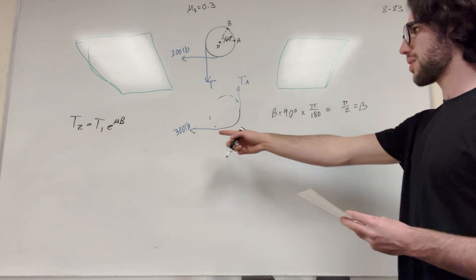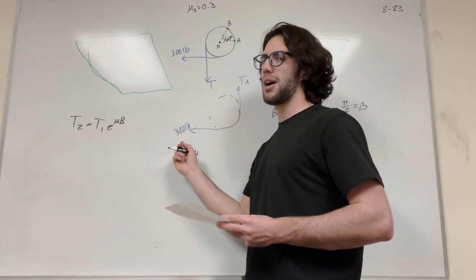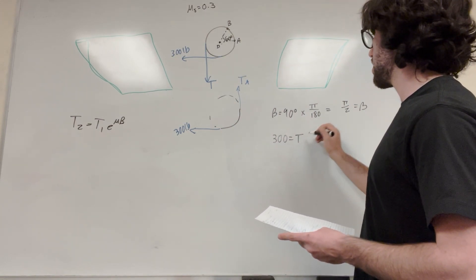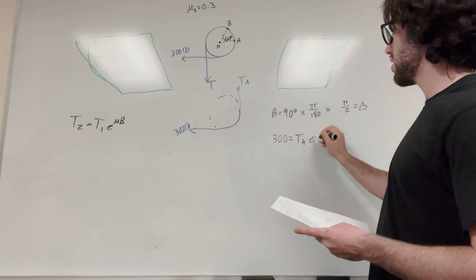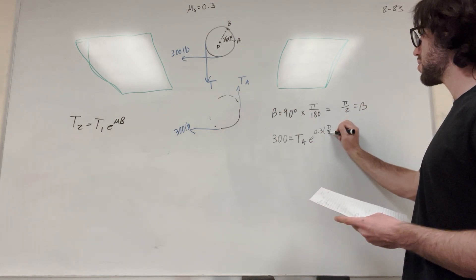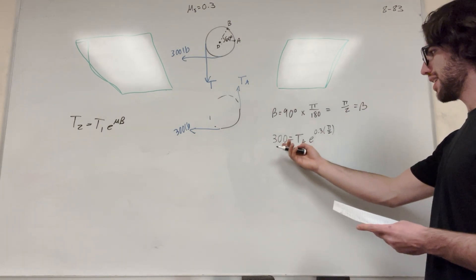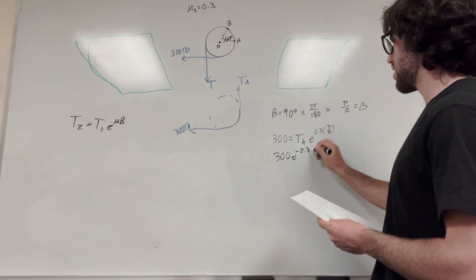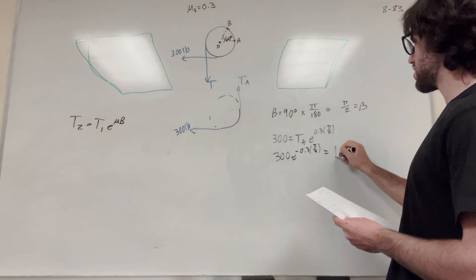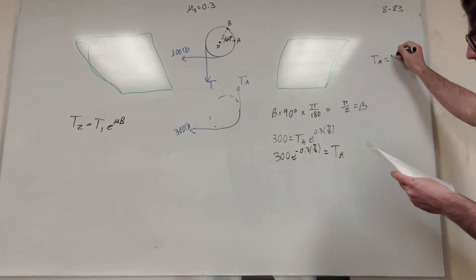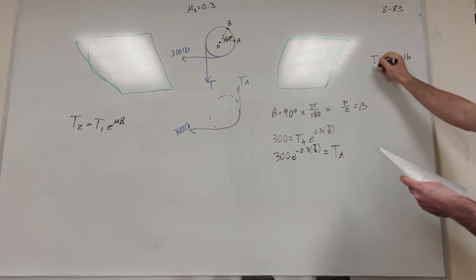So let's go ahead and do it. So we're looking for T1, right? We said T2 is our 300 pounds and T1 is our lighter force. So our equation is 300 is equal to TA, E, coefficient of static friction, 0.3 beta pi over 2. So now we need to divide by this to get over here. So then it's going to become 300 E to the negative 0.3 pi over 2 is equal to T of A. Okay. So solve this. T of A is equal to 187 pounds. There you go. So we found that. Pretty easy.